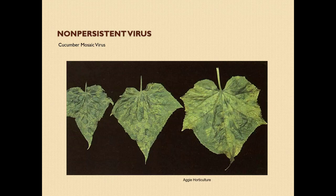Here's an example of a non-persistent virus: cucumber mosaic virus. This is spread by aphids and also by cucumber beetles. It overwinters in wild cucumber seed, wild perennial milkweed, ground cherry, and matrimonial vine. It's important to note it won't just affect cucurbits — it will affect many other things. This is one of our most common viral diseases.